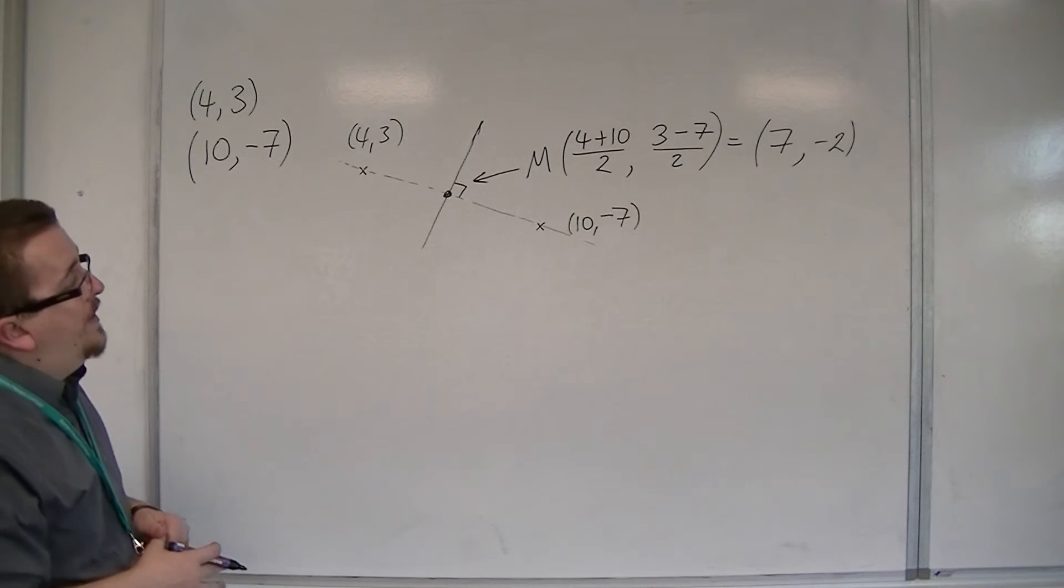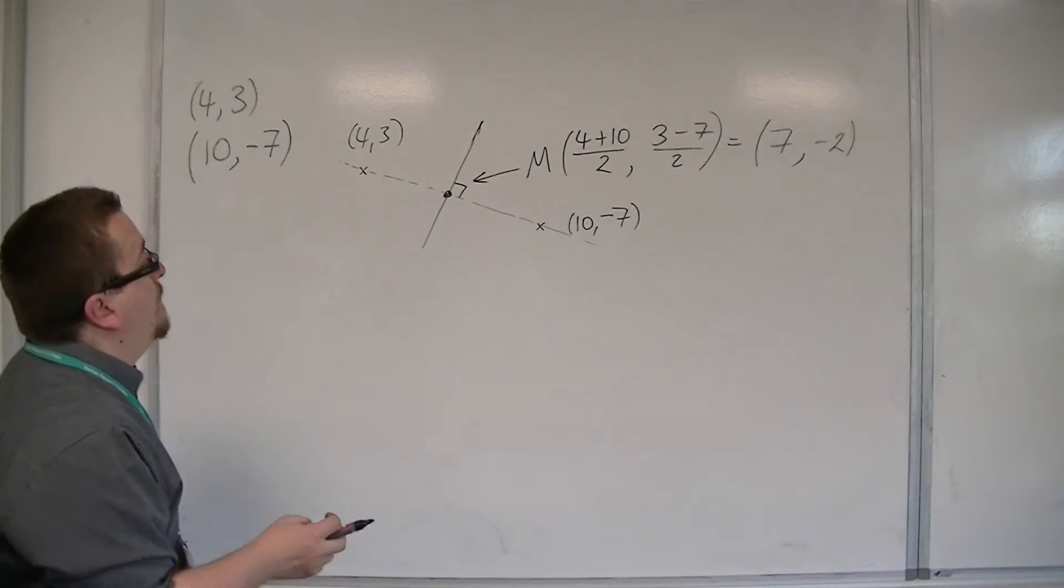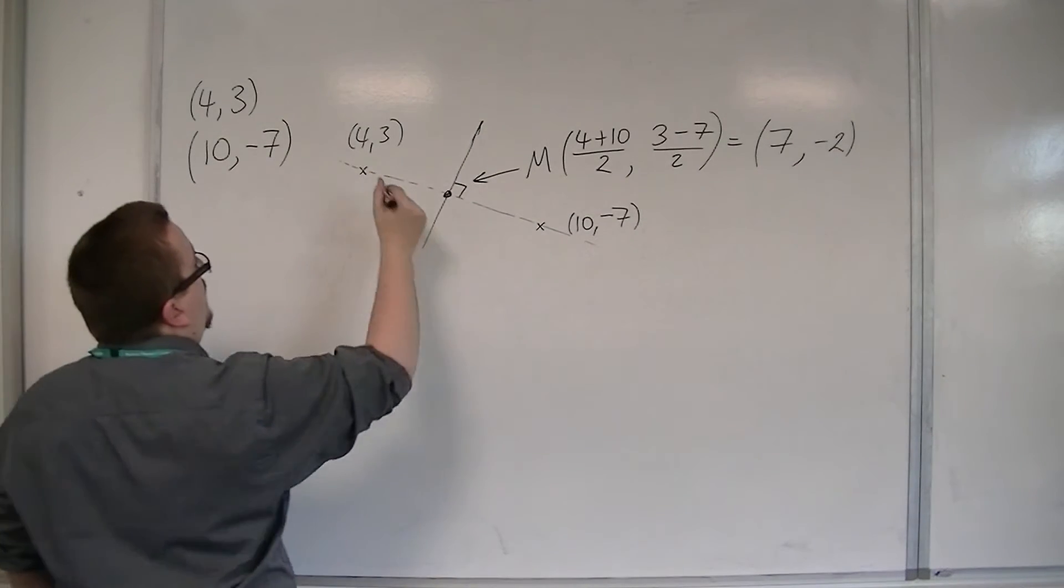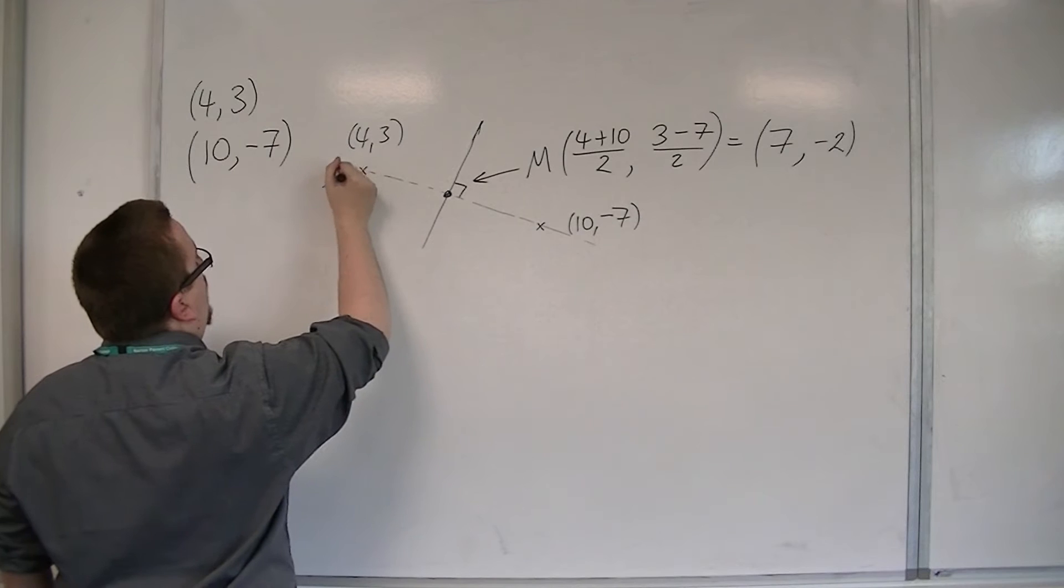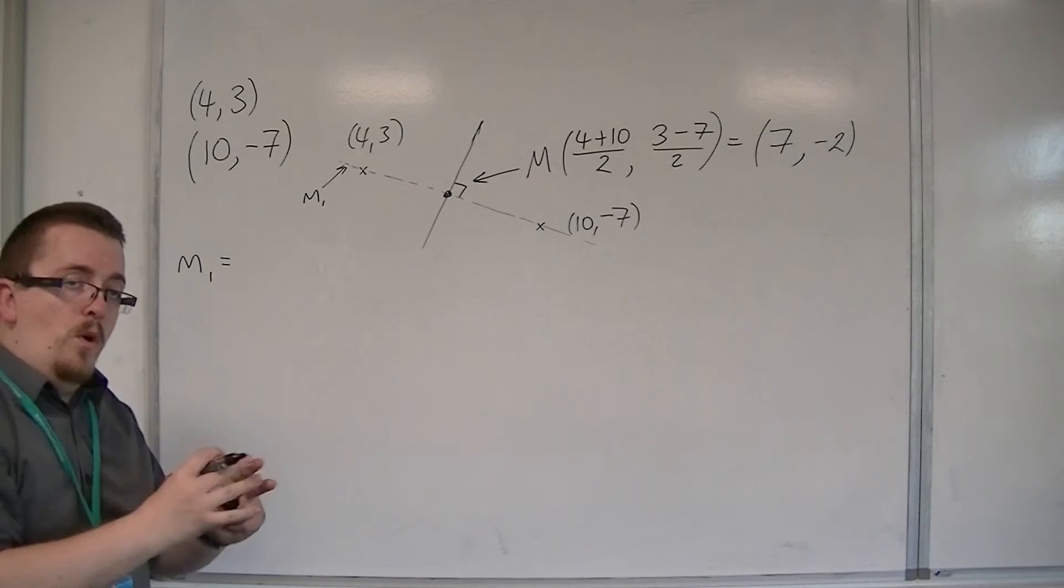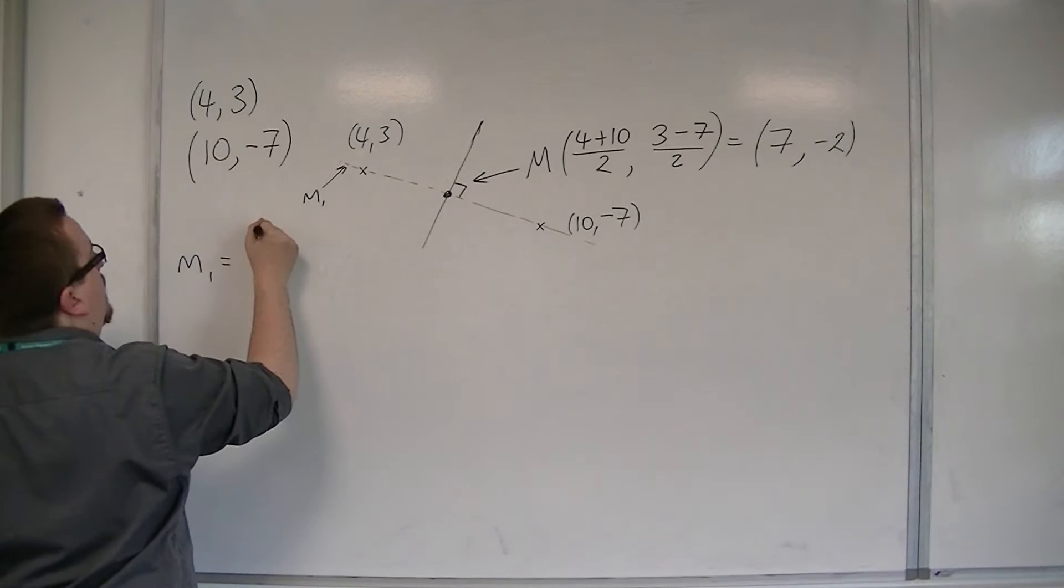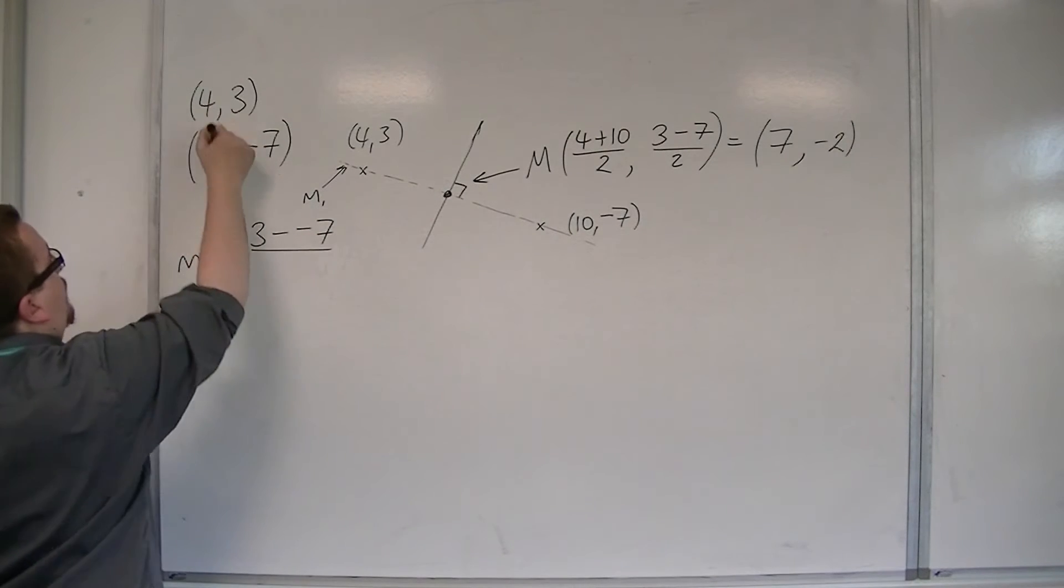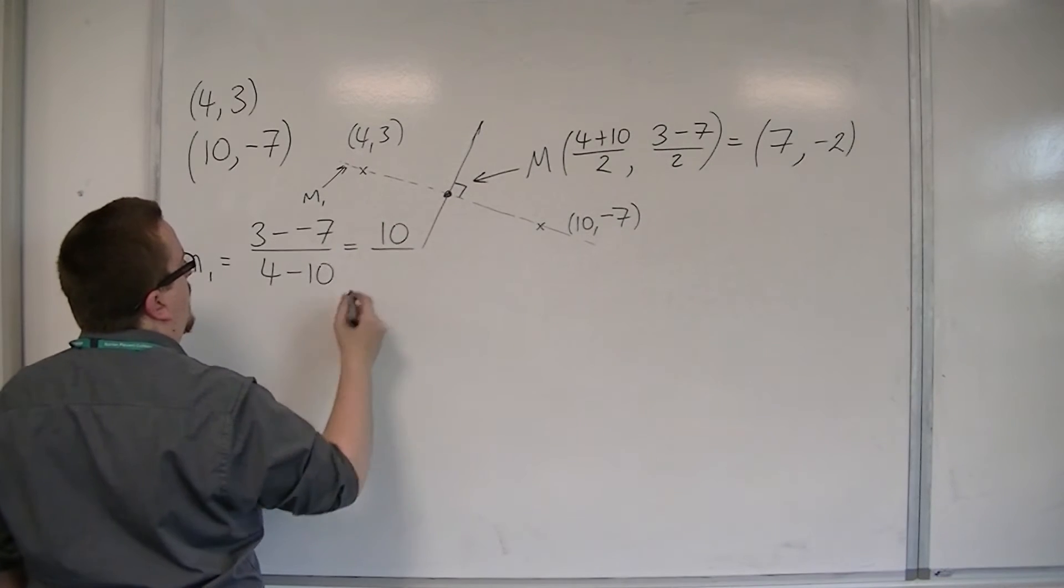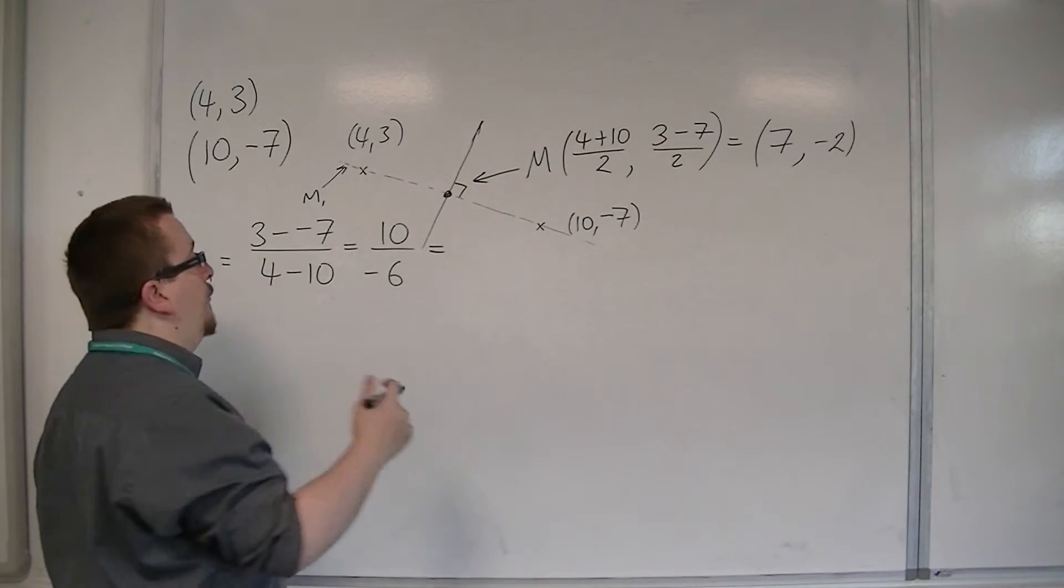I also then need to find the gradient of this perpendicular line. But the only way to do that is to first find the gradient of the original line. Let's say that this line has gradient M1. M1 is equal to the difference in the y-coordinates, divided by the difference in the x-coordinates. 3 take away minus 7, divided by 4 take away 10. We get 10 in the numerator, and minus 6 in the denominator, which could be simplified to minus 5 thirds.